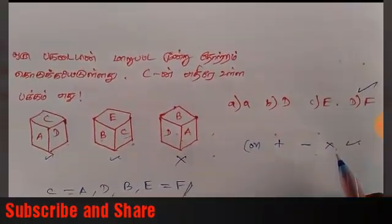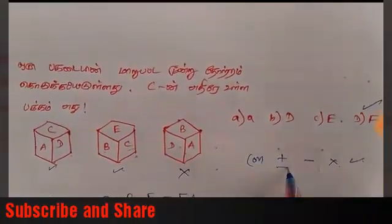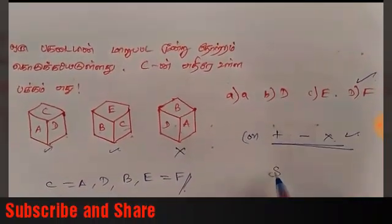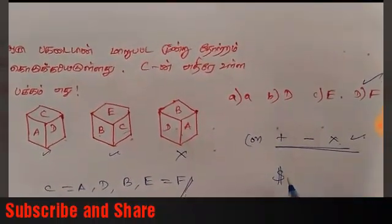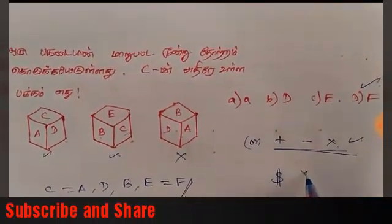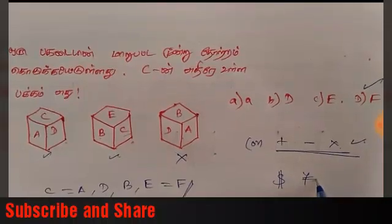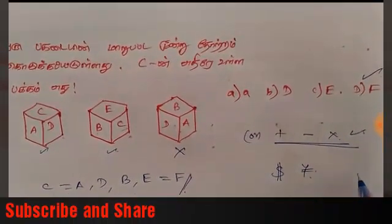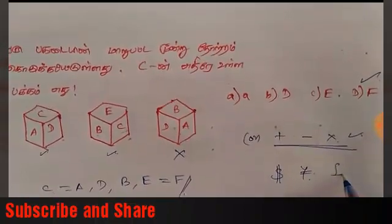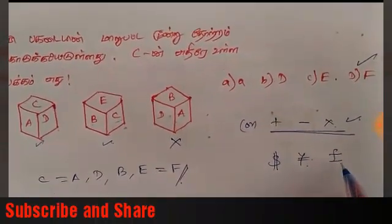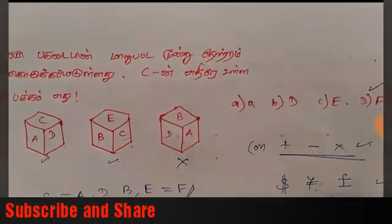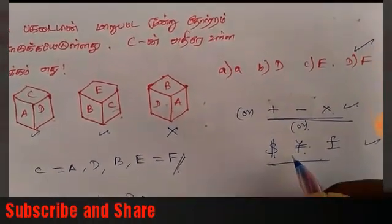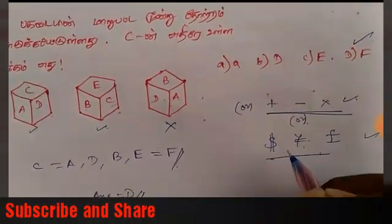If we see the next one, F is the answer. How do you recognize F? Then we see F. Dollar, yen, rupee and the same symbols like that.